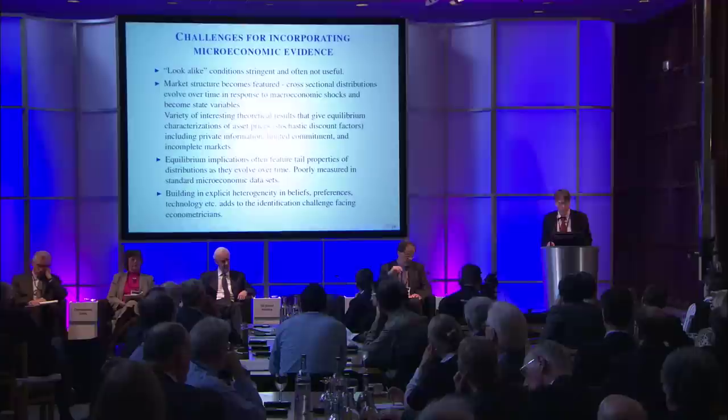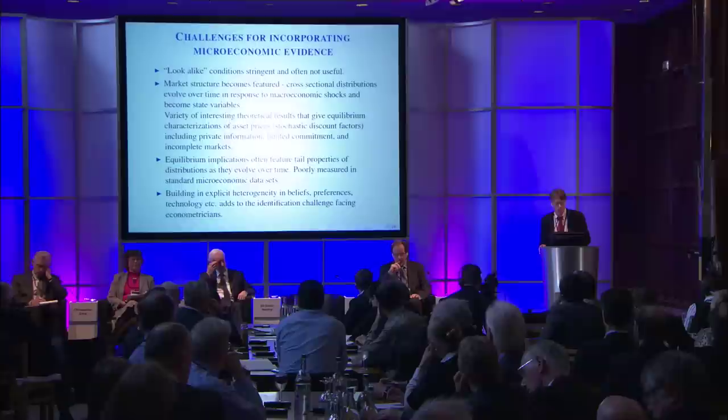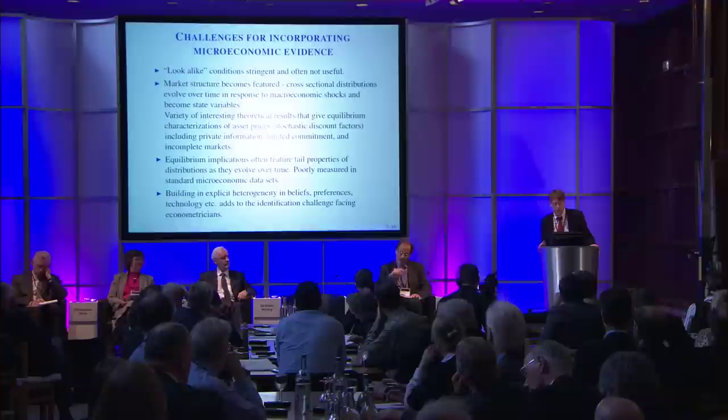As we confront microeconomic evidence, building in explicit heterogeneity in beliefs, preferences, and technology becomes an inevitable push, and of course this adds all the more to the identification challenges facing econometricians. I think this is a potentially fertile way to go, and I also think it's relevant for the agent-based simulation literature, which I view as very close to the papers I'm talking about — to the extent that it's going to confront microeconomic evidence, these same types of challenges and issues are going to come into play.